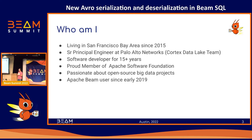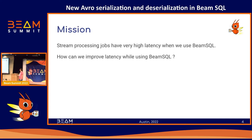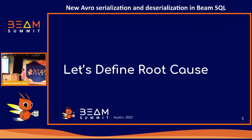I'll explain our infrastructure tomorrow, but basically I stopped counting after 10,000 jobs — we use Beam SQL with 10,000 jobs and all of them are generated by SQL. That's why we see the issue. The mission is: I'm working for a commercial company, which means money is important. Why is our streaming jobs cost very high, and why is SQL latency slower compared with hand-written Beam jobs?